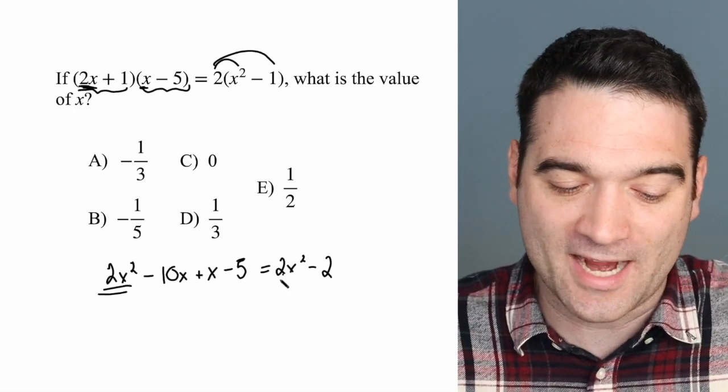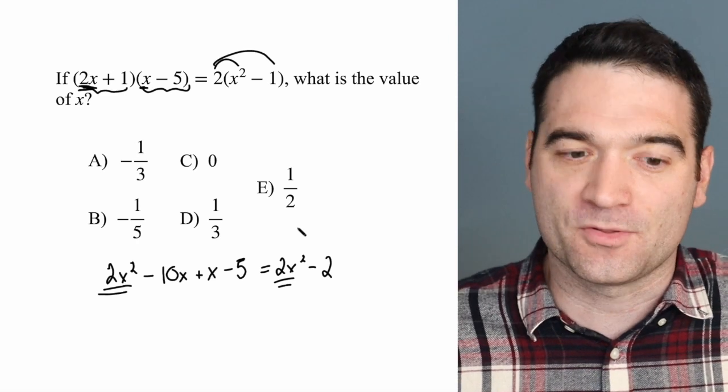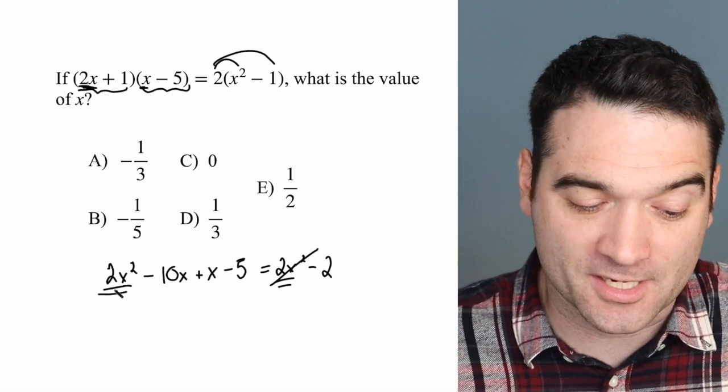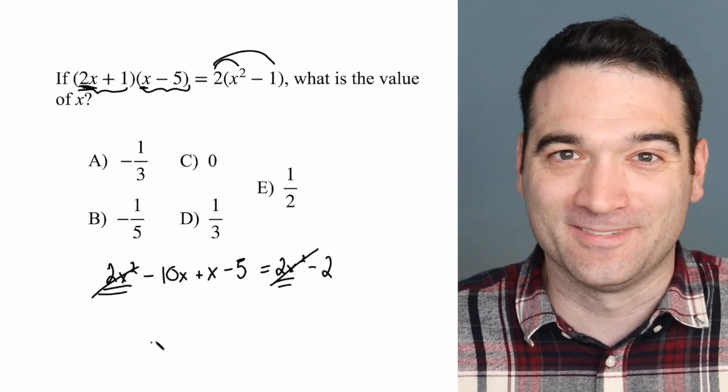So let's start by subtracting 2x squared from both sides. I have 2x squared on both sides. I'll just get rid of it on both sides. Boom. Not a quadratic anymore. Everything's okay again.